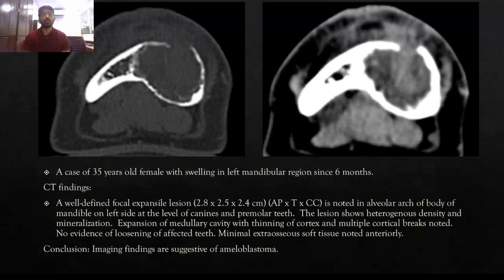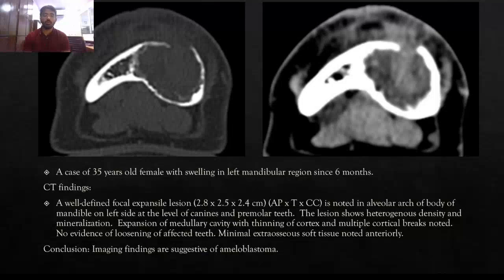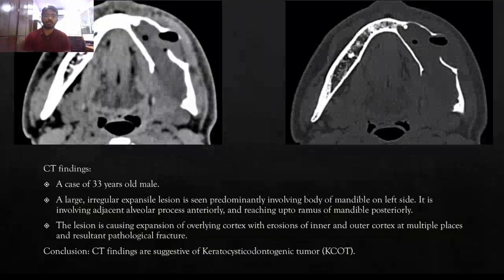The first case: a 35-year-old female with swelling in the left mandibular region for 6 months. On CT findings, a well-defined focal expansile lesion is located in the alveolar arch of the mandible on the left side at the level of canine and premolar. The lesion shows decreased density and mineralization, expansion of the mandibular cavity with thinning of cortex and multiple cortical breaks, with no evidence of loosening of teeth. Conclusion: Ameloblastoma.